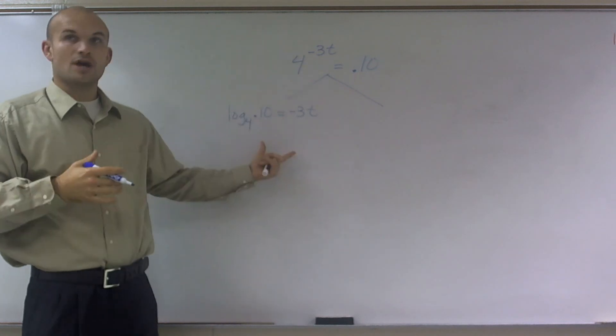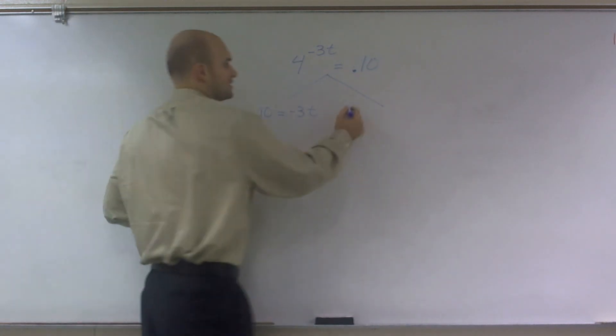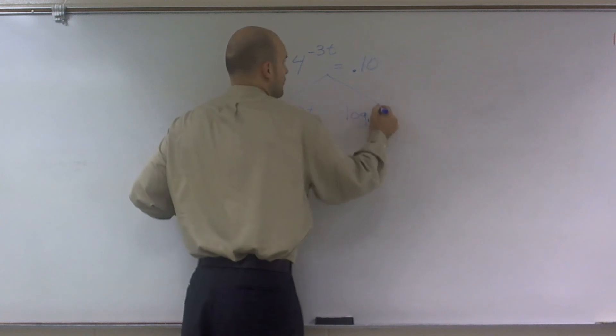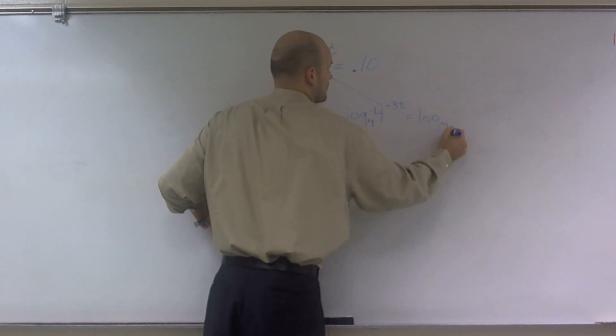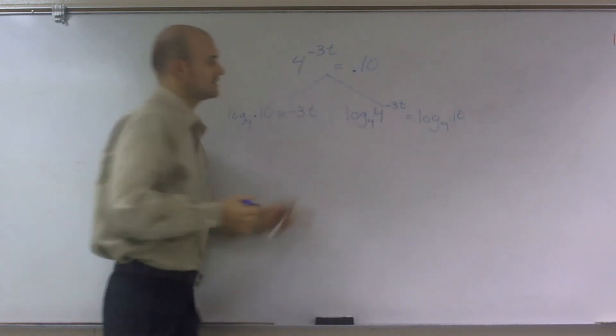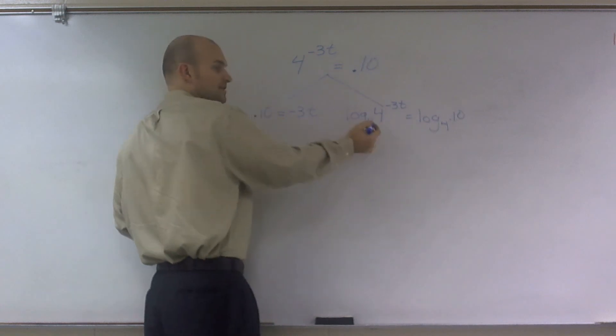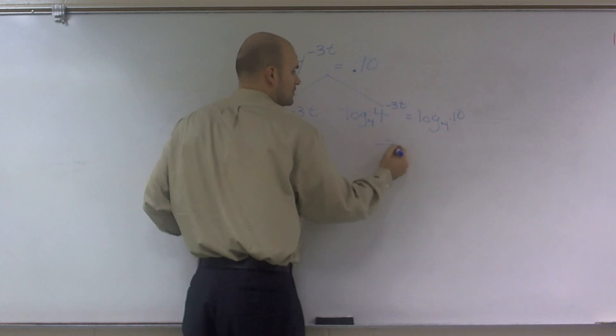But since I know I can't rewrite 0.10 as a base 4, I'm either going to have to transfer to logarithmic form, or I can take the log base 4 of each side. And the reason why I chose base 4 is because your inverse property tells you that whenever you have a log with the base and what you're raising the same, and you have an exponent, it's just going to equal your exponent.